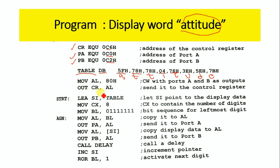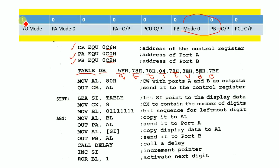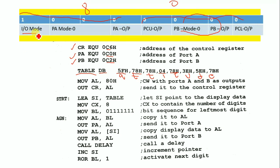The instruction 'MOV AL, 80H' followed by 'OUT CR, AL' moves the value 80H into the control word register of the 8255. The value 80H represented as 1000 0000 sets the 8255 into IO mode of operation, where all ports act as output ports.